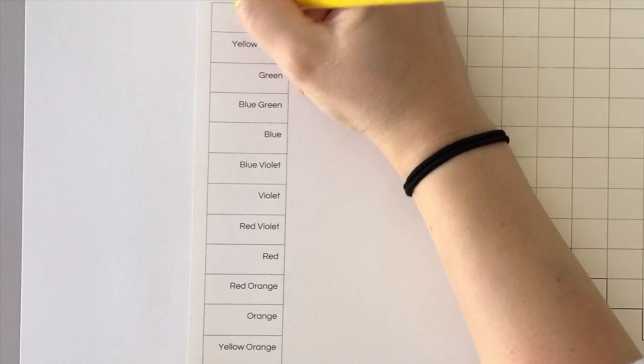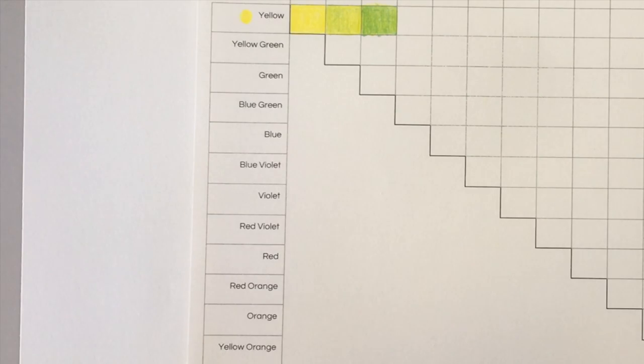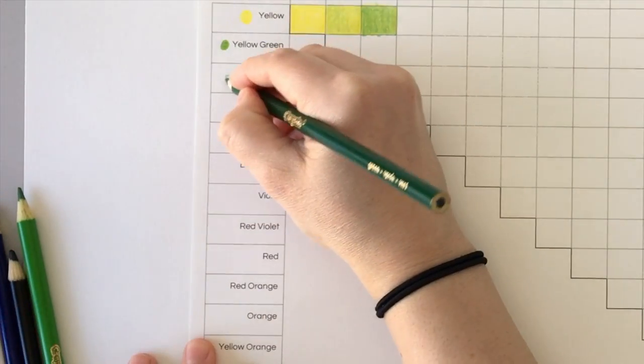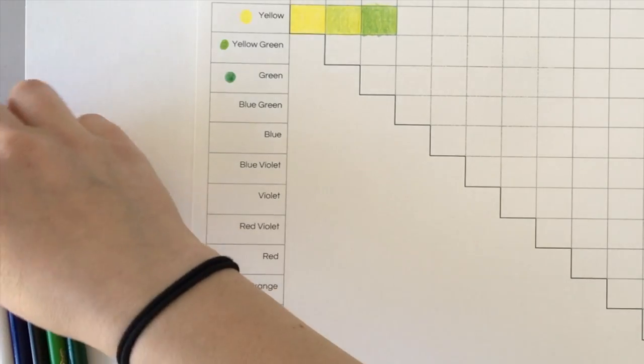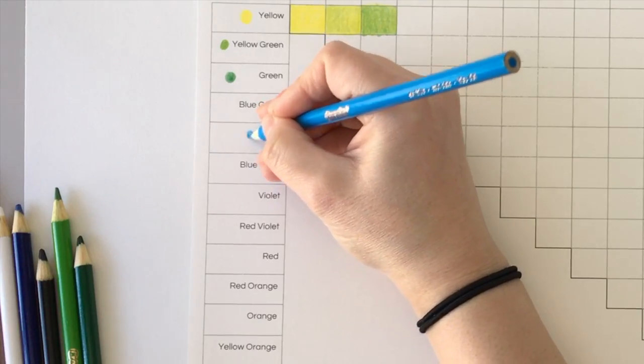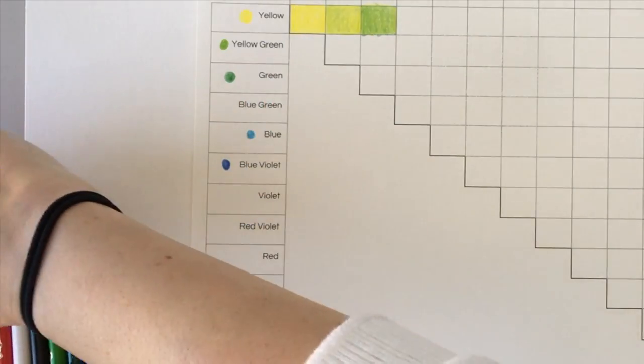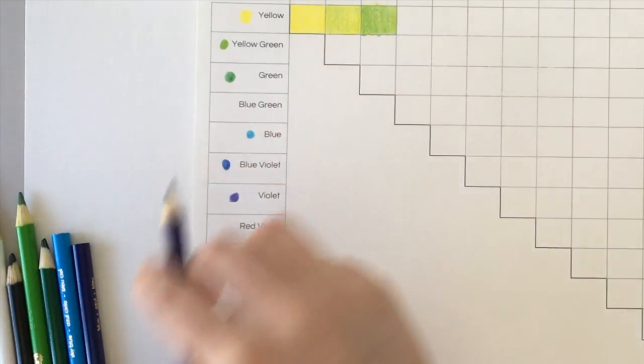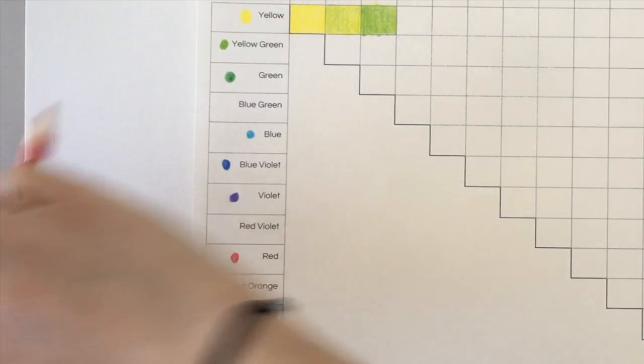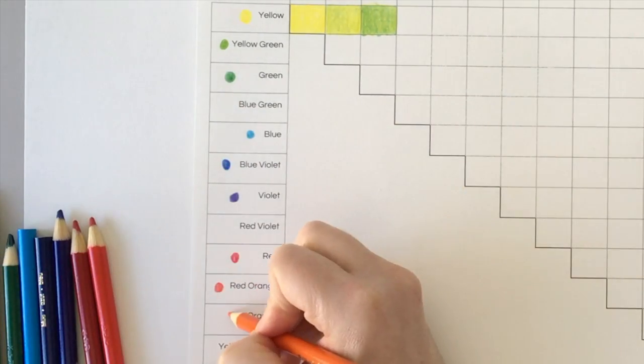I'm just going to show you which colored pencils you're going to use. Yellow, yellow-green, green. Like I said, blue-green we're going to have to mix. Blue is going to be the light blue, blue-violet is going to be the dark blue, violet, red-violet I'm going to have to mix. I have red-orange and orange.